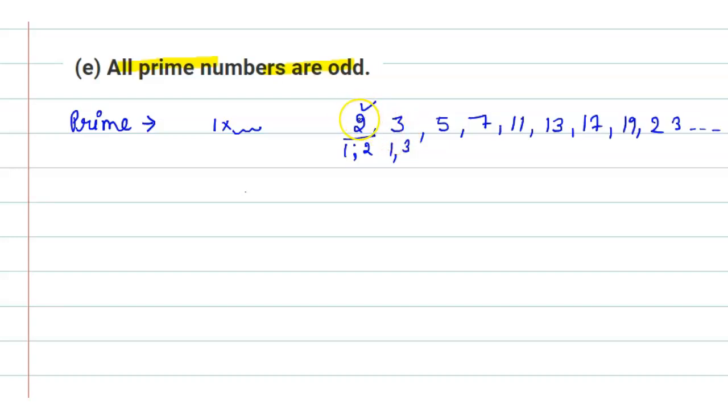So here is even number present, so all prime numbers are not odd. So here given statement is false. Thank you.